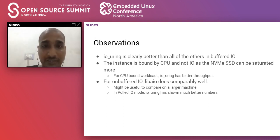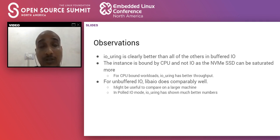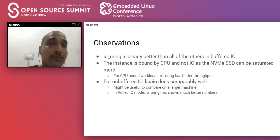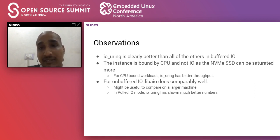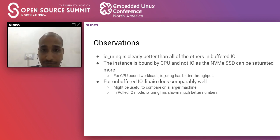Observations: IOUring performs well. The EC2 instance used was bound by CPU rather than disk bandwidth — the NVMe storage could not be saturated, but CPU utilization exceeded 100%, so more CPUs would be needed to test true performance. Even with limited CPU, IOUring fares much better than other interfaces for both bandwidth and IOPS.